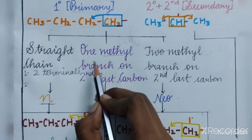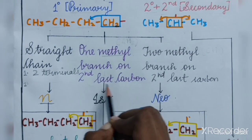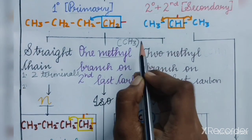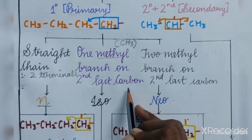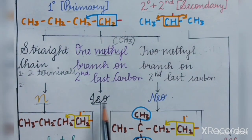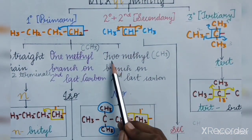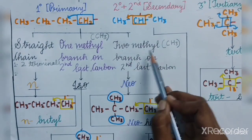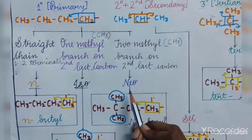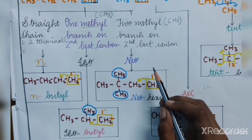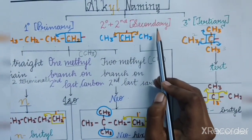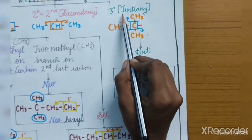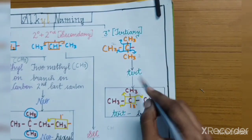For the next prefix, the condition is it should have one methyl branch (CH3) on the second last carbon — then the prefix used would be iso. If it has two methyl branches on the second last carbon, the prefix used would be neo. If the nature is secondary, the prefix used would be sec. And if the nature is tertiary or three degree, the prefix used would be tert.